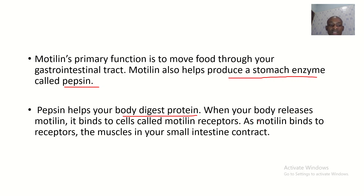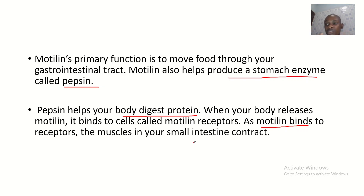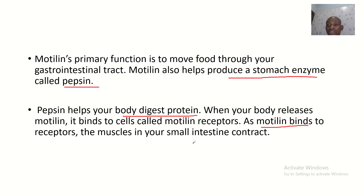When your body releases motilin, it binds to cells called motilin receptors. As motilin binds to receptors, the muscles in your small intestine contract. So basically, we have seen two roles of motilin: motilin binds to receptors and helps the small intestine contract, and motilin aids the production of pepsin, which helps in protein digestion.